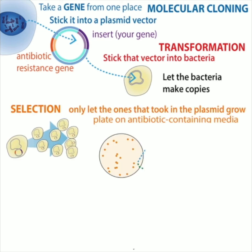A key element to all of this is the idea of antibiotic-based selection. In that plasmid vector that has the genetic recipe — your insert, we call it — there's also, on the generic part of that vector, usually an antibiotic resistance gene. This lets the bacteria make something that gives it a superpower — it can resist certain antibiotics. Not all antibiotics, but a specific antibiotic that matches that antibiotic resistance gene.